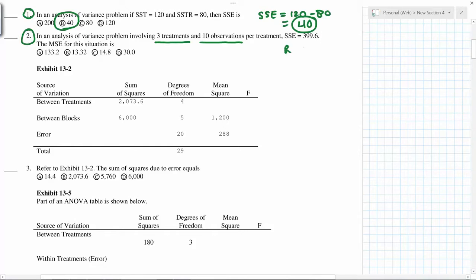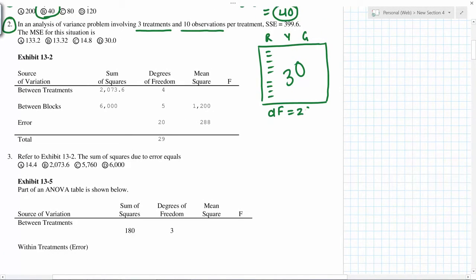Let's say you have red, yellow, and green - those three treatments with 10 observations for each. So totally you're going to have 30 observations. Degree of freedom will be 29, so this is total degree of freedom, 29 minus 2 because there are three treatments, so 2 degrees of freedom.